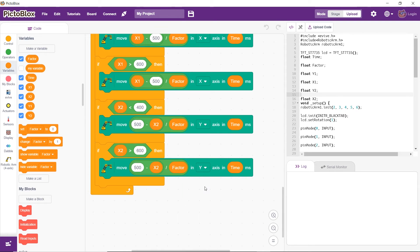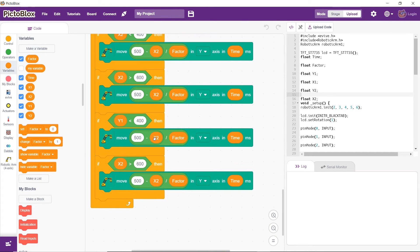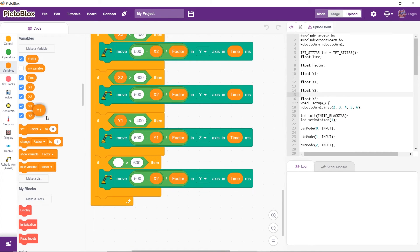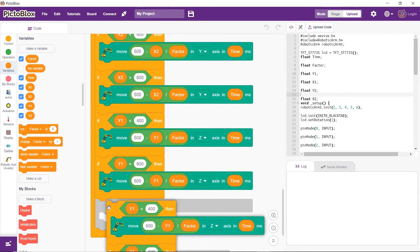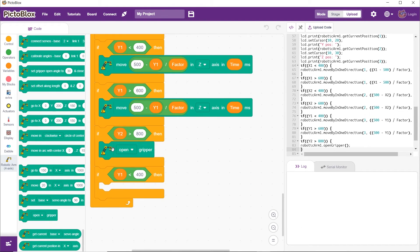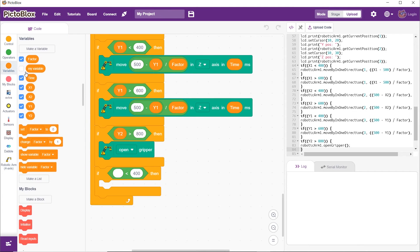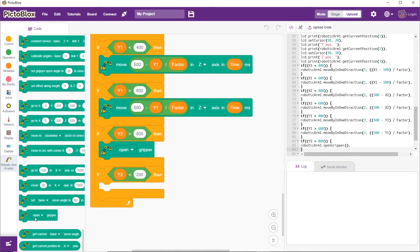Similarly, we will write the code for the y and z-axis. Now, for opening and closing the gripper, add another if block. If the value of the right joysticks along the y-axis is greater than 800, we will open the gripper. If it is less than 200, we will close the gripper.